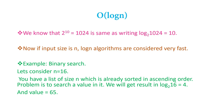For Big O of log N, you should understand the concept of logarithms. In a single line: 2 to the power 10 equals 1,024. This is the same as writing log base 2 of 1,024 equals 10 — meaning, what power of 2 gives you 1,024? If the input size is N, log N algorithms are considered very fast. They sit somewhere between Big O of 1 and Big O of N — faster than Big O of N.